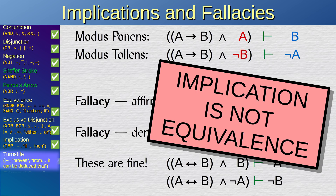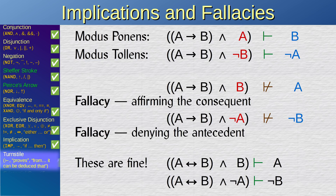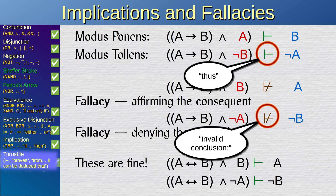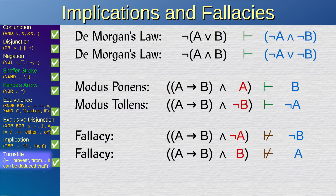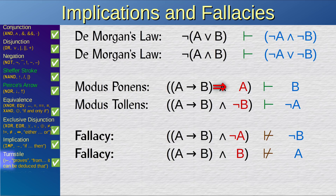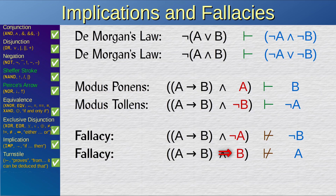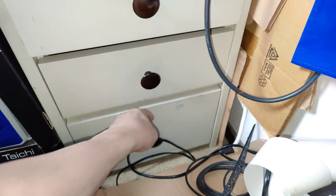The turnstile symbol is just a short way of saying that from some premises we can make a conclusion. For example, De Morgan's laws can be expressed using the turnstile. Likewise for the modus ponens and modus tollens: when A implies B and A is true, it is valid to conclude B is true; when A implies B and B is false, it is valid to conclude A is false. The inverse of the turnstile can also be used to express fallacies: when A implies B and A is false, it is invalid to conclude B is false; when A implies B and B is true, it is invalid to conclude A is true.